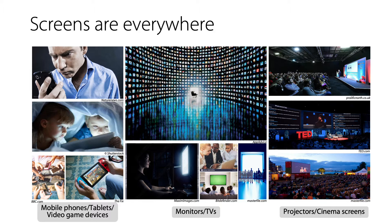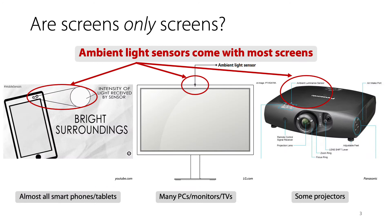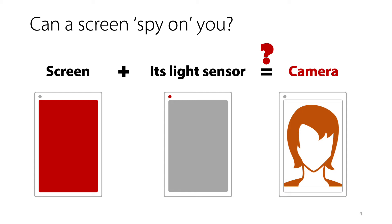As we know, screens are everywhere — mobile devices, monitors, TVs, and even cinema screens. However, these screens are not only screens. Most of them come with built-in ambient light sensors to adjust the brightness automatically. What motivated us most is that, unlike front cameras, accessing these ambient light sensors does not require any user permission, at least on Android devices.